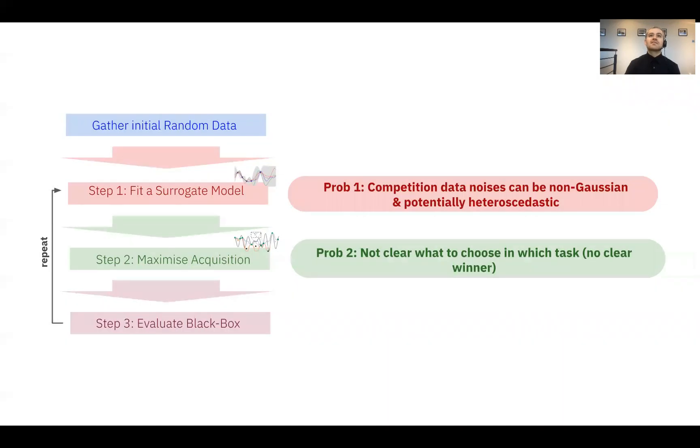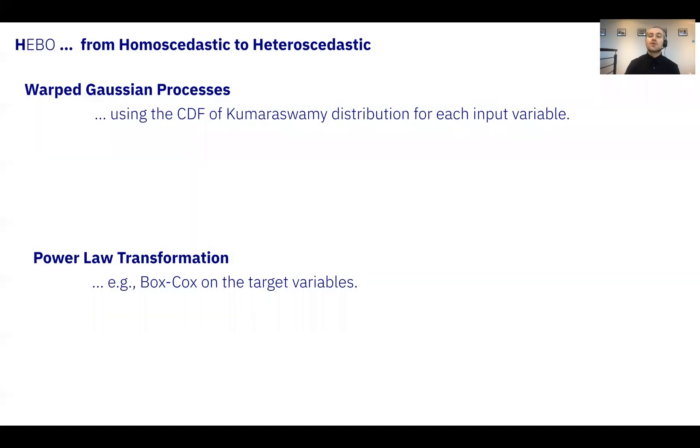Now, let us understand how we dealt with non-Gaussian likelihoods in Bayesian optimization. We use a learned non-linear transformation on the input and a fixed non-linear transformation on the output to better deal with non-Gaussian likelihoods.